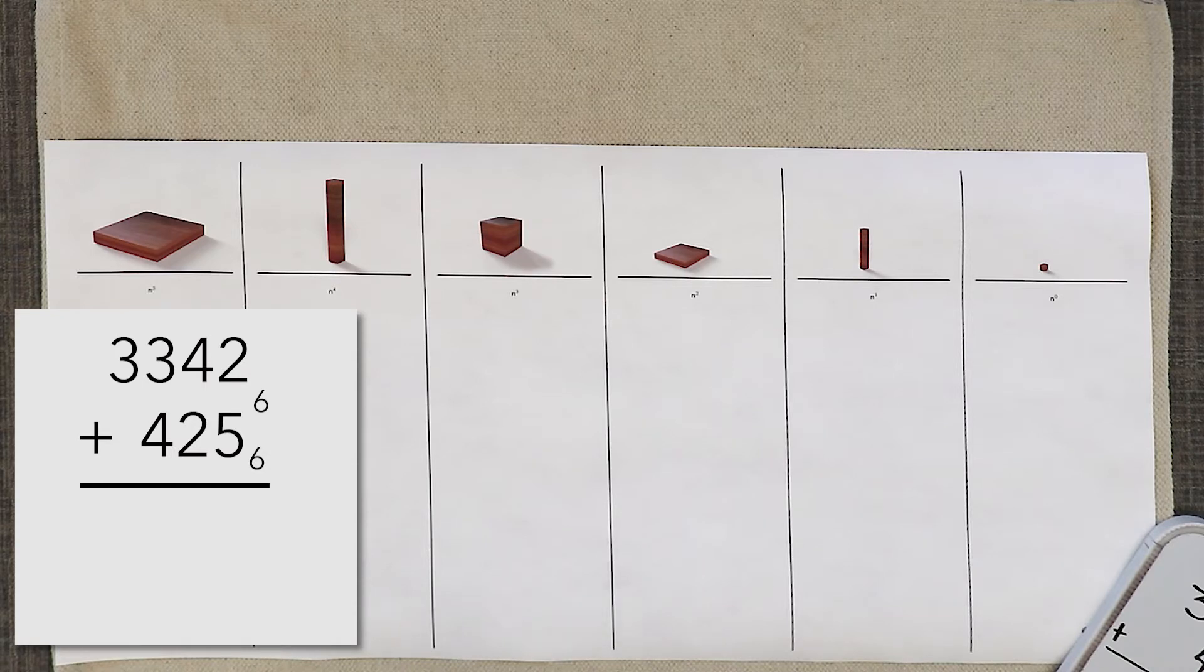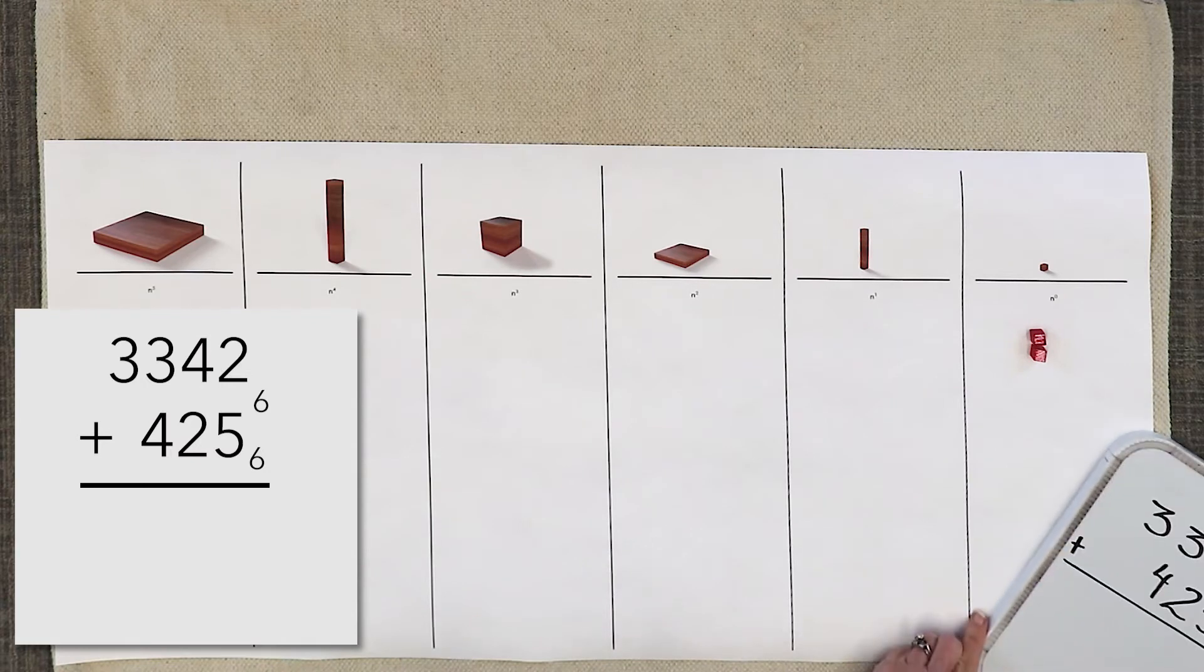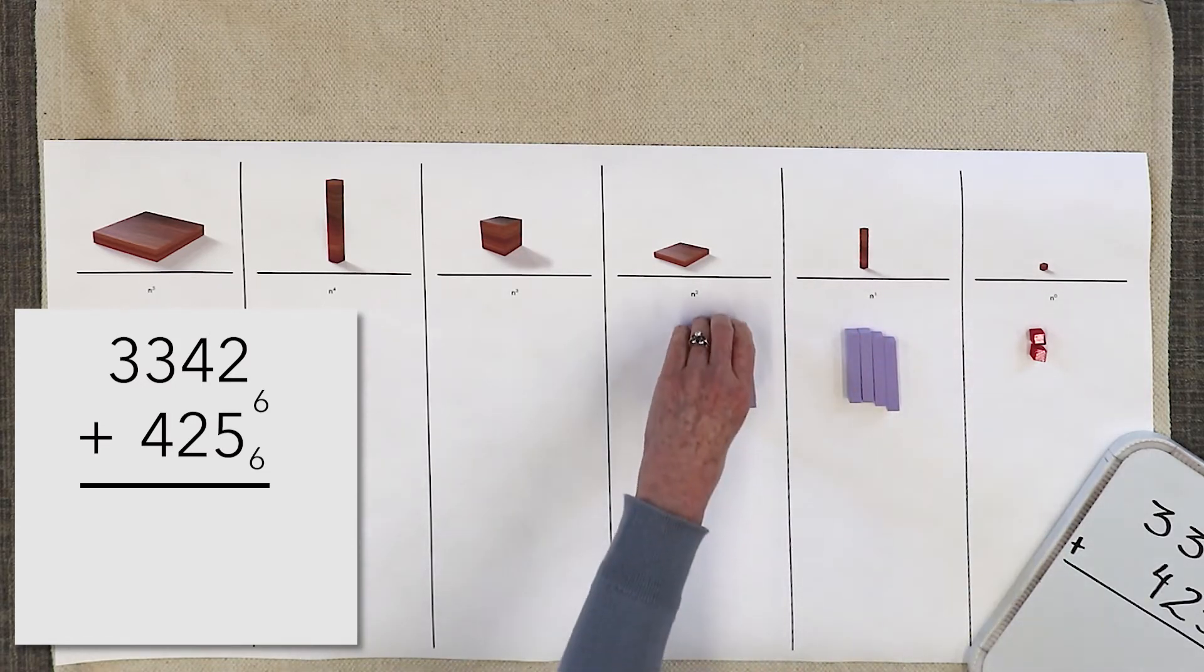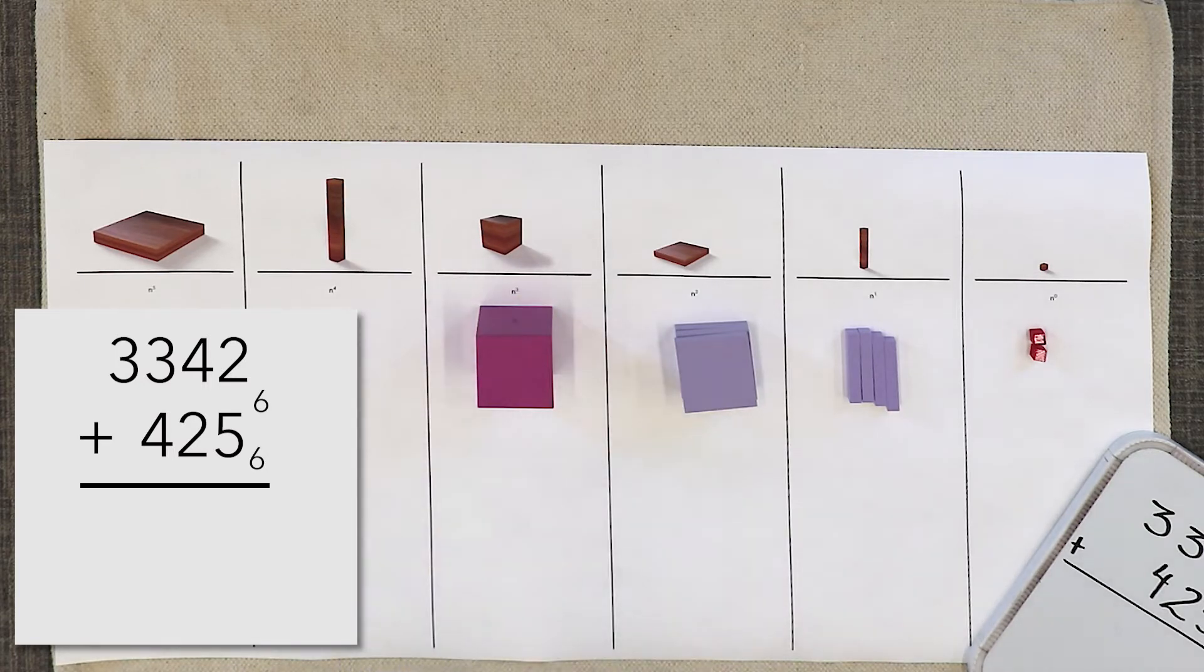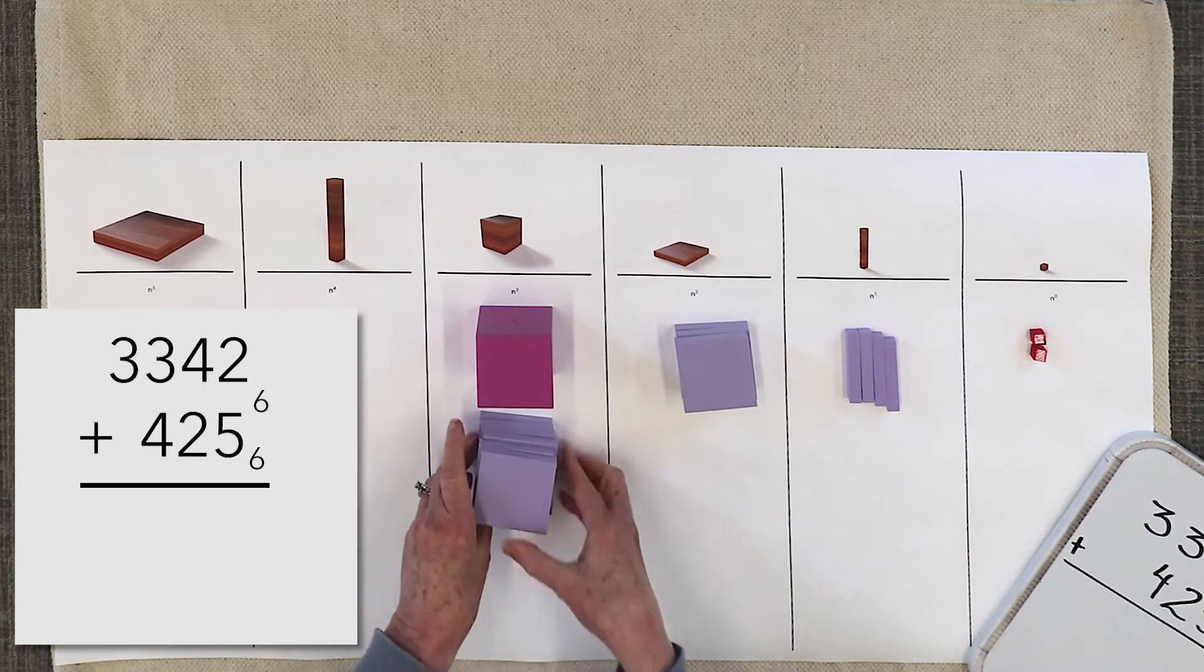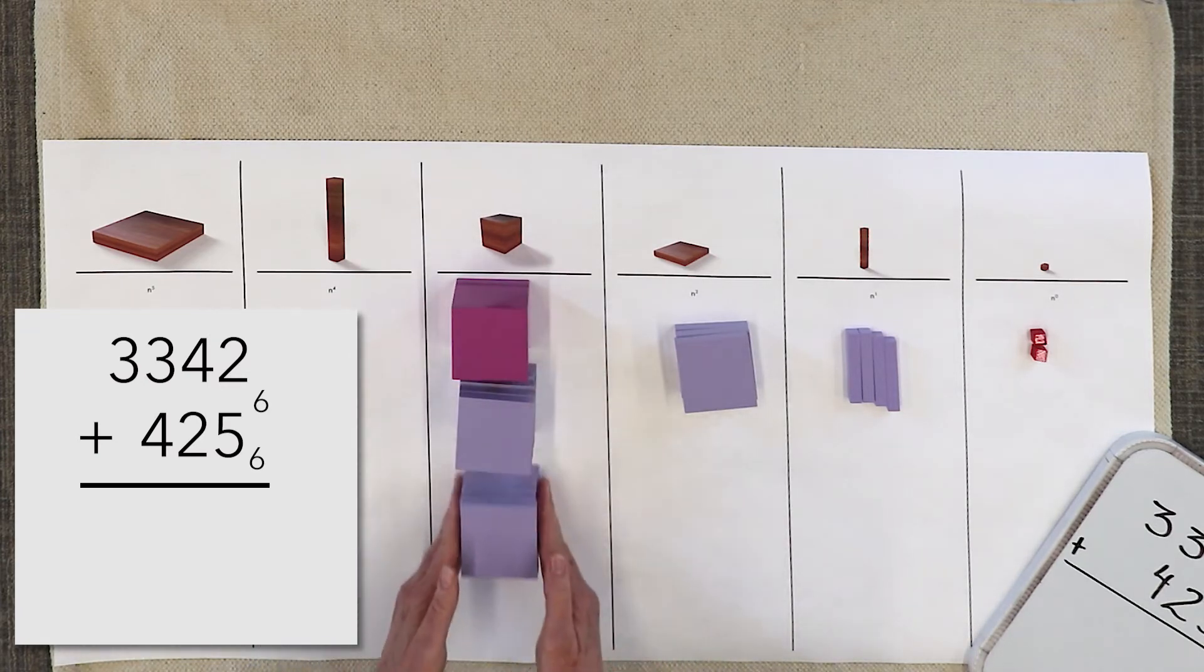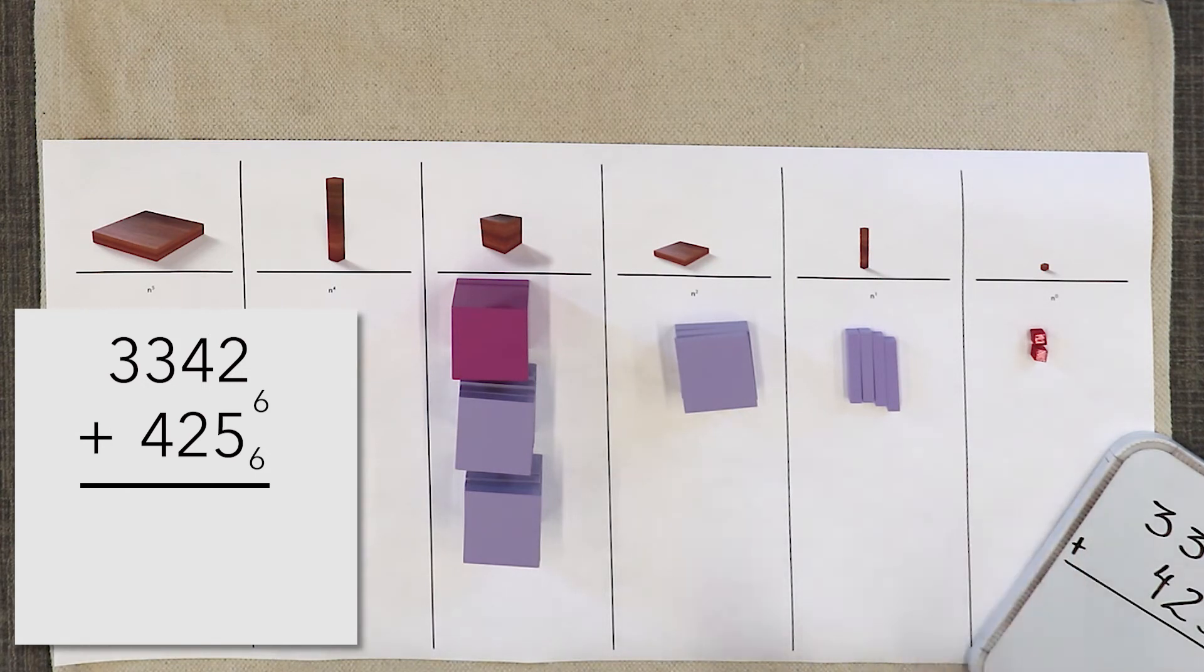So my first addend is I have two cubes, four rods, three squares, and three cubes, but the concrete material is limited so we have to make up two more cubes. So this is my first addend: 3342 base six.